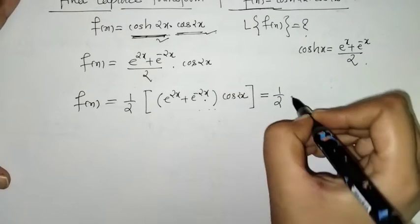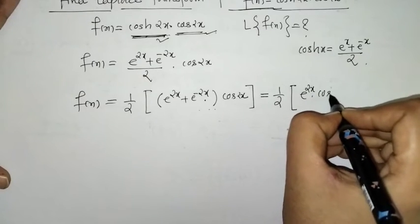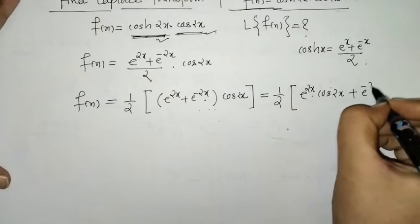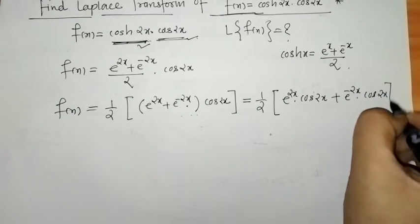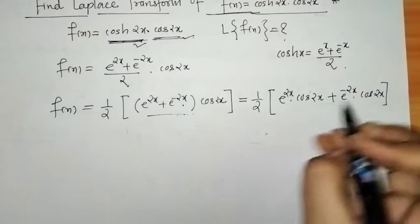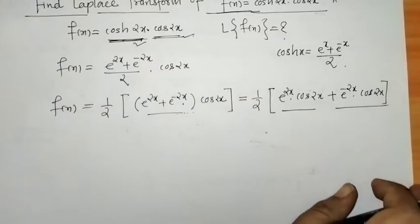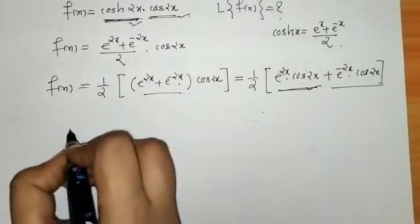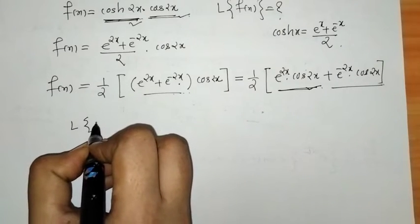After simplification we have (1/2)[e^(2x)·cos(2x) + e^(-2x)·cos(2x)]. Now we recall that the Laplace transform of cos(2x) is s divided by s² plus 4.